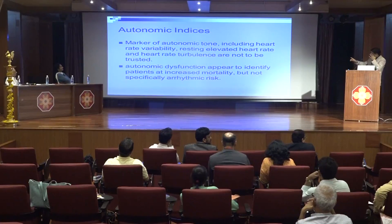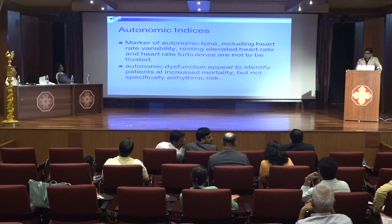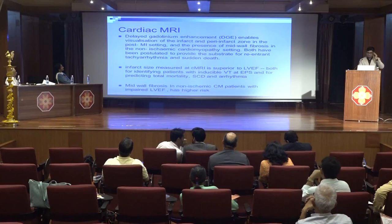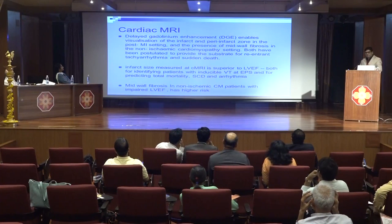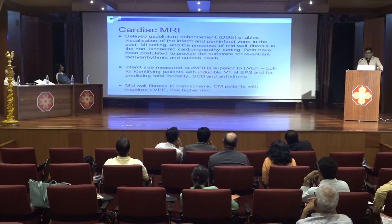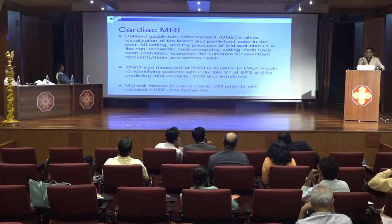If a patient is having autonomic dysfunction, yes, they will have higher mortality. However, just for the risk of arrhythmias, no conclusive evidence exists so far. One of the valuable diagnostic approaches that is really helpful — echo, ECG, and also cardiac MRI. With cardiac MRI, delayed gadolinium enhancement tends to enhance visualization of not just the infarct area but also the peri-infarct area. Those infarct areas tend to occur in patients who have had myocardial infarction.